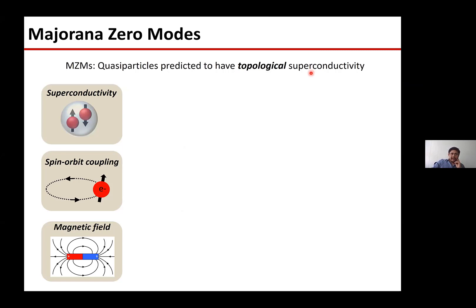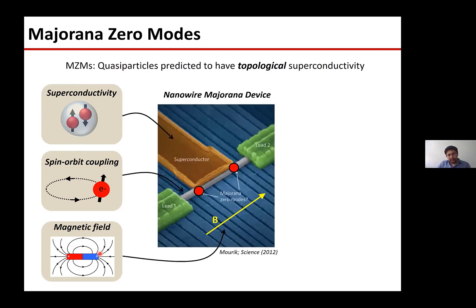What we are interested in are these so-called Majorana zero modes. In principle, you should be able to engineer them if you have a combination of three things: superconductivity, a semiconducting material with large spin-orbit coupling, and a Zeeman field - a magnetic field. A picture many of you have seen is a one-dimensional nanowire coupled to a superconductor, with small gates that allow you to control properties of this hybrid system locally. The idea is that you apply a magnetic field and at some point expect to see localized Majoranas.